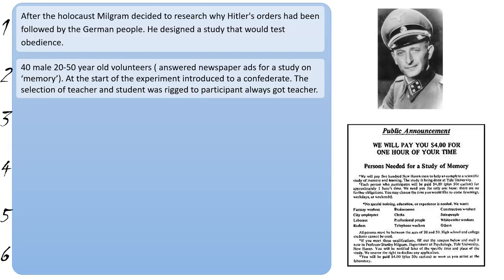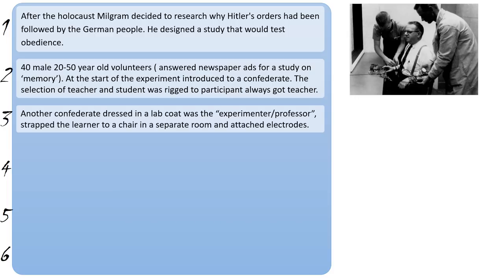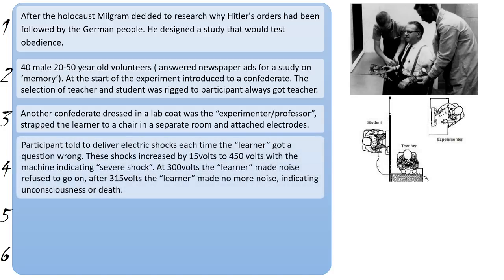One participant was meant to receive the role of teacher and one the role of student. This was rigged so the true participant would always get the role of teacher. There was another confederate dressed in a lab coat whose role was to be the experimenter or the professor. The professor took both individuals into a side room and strapped the learner — the confederate — to a chair and attached electrodes to them.